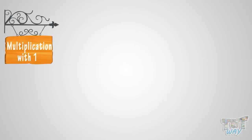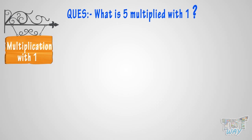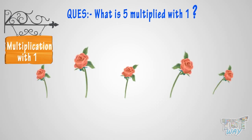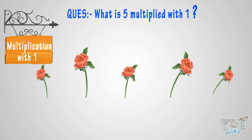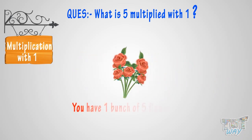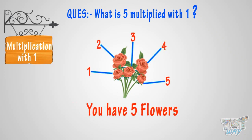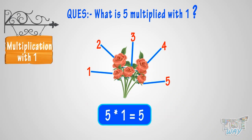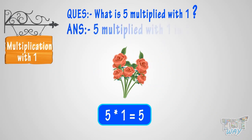Let's take an example. What is five multiplied with one? It is one times five objects. See the figure? You have one bunch of five flowers. Then how many flowers do you have? You have five flowers. This is five multiplied with one, or one times five flowers. So, five multiplied with one is five.